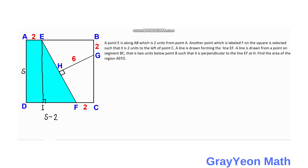Since we projected AE downwards to DF, then DI is also 2 units. And we can see that if DF is equal to S minus 2 and DI is equal to 2, then IF is equal to S minus 4.